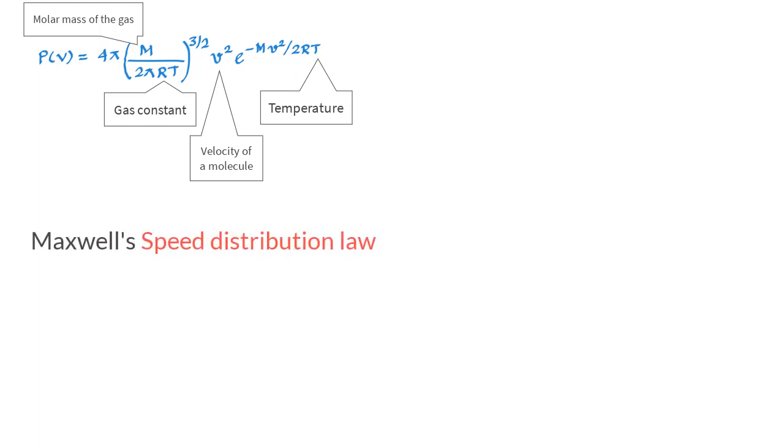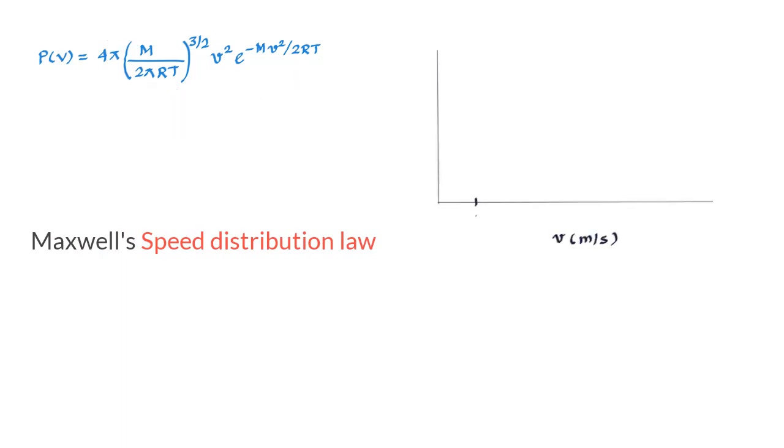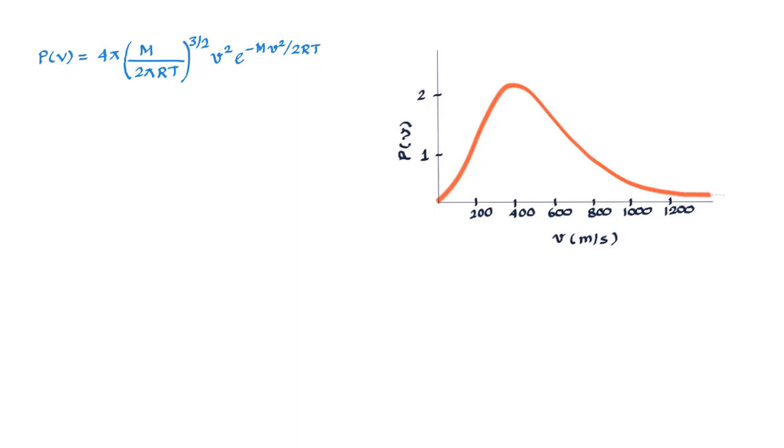So this here is a plot of this equation with P(v) on the y-axis and v on the x-axis. Now it is very important to understand how we read and interpret this graph. So let us see what really is this quantity P(v).